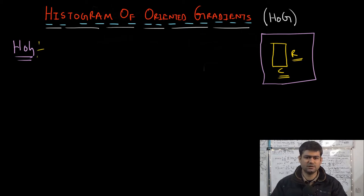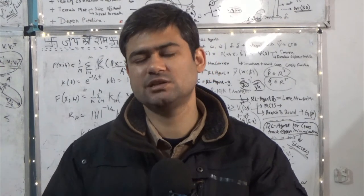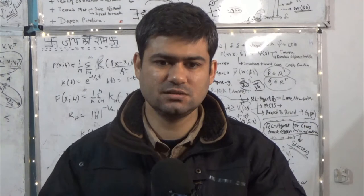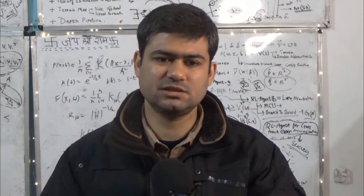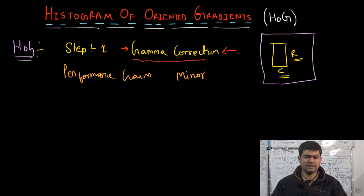The first step in the HOG descriptor is gamma correction. Gamma correction is an image processing method that roughly improves the contrast or enhances the intensity values of pixels in an image — it is a technique for image enhancement. However, the performance gains of gamma correction are minor, and thus in most HOG applications this first step is usually ignored.